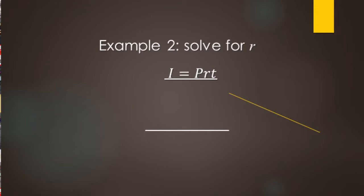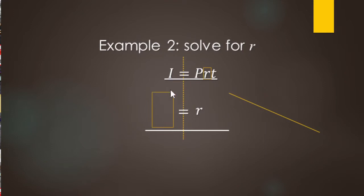For this next example, we're going to be solving for R. So we look at our equation, find the R — there it is. We want R equals and then what it equals over here. Same approach: what's being done to R, and then we undo it, because we want to go from PRT to just plain R.